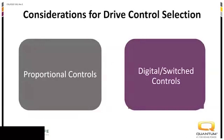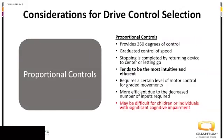When we start thinking about drive controls, there are really two different types: proportional devices and switch devices. With proportional devices, the more input you give, the more output you get — essentially like a gas pedal or plane throttle. That's what a proportional device is.